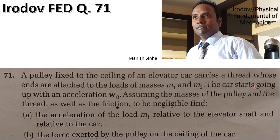The car starts going up with an acceleration W0. Assuming the masses of the pulley and the thread as well as the friction to be negligible, find the acceleration of the load M1 relative to the elevator shaft and relative to the car, and the force exerted by the pulley on the ceiling of the car.